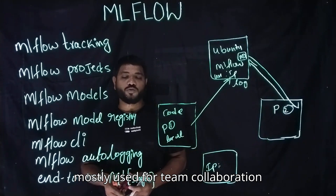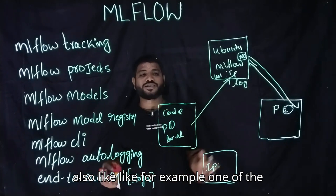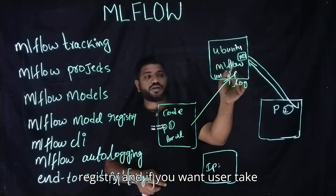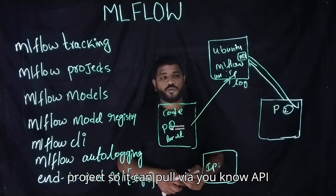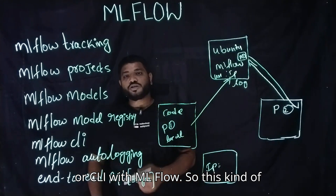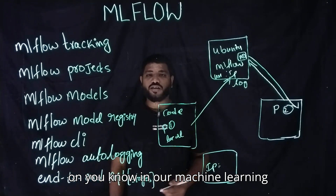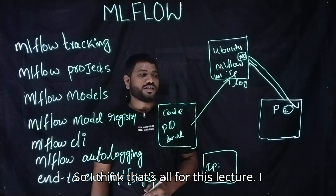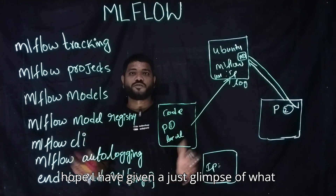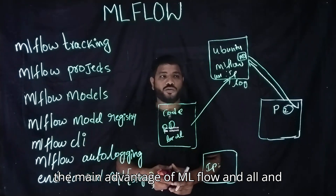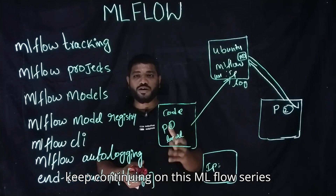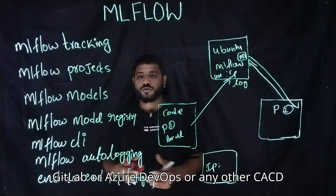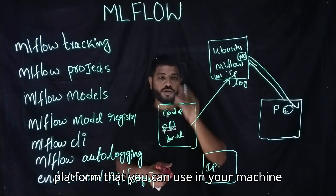That is why MLflow can act as a model registry. Once a model has been pushed there, it can be pulled into not only one project but multiple projects. MLflow can mostly be used for team collaboration also — one team member pushes a model from their local to this remote repository, and if you want to take advantage of that model in any other project, you can pull it via API or CLI with MLflow. So this kind of amazing feature MLflow has been giving on the machine learning lifecycle. That is why it has been used widely in the current market. I will cover all the concepts theoretically brought here and show how they can be used — tracking projects, model registry, model CLI, pulling one experiment to another, and picking the best experiment or best model by comparing in the MLflow UI. Stay tuned for this channel.